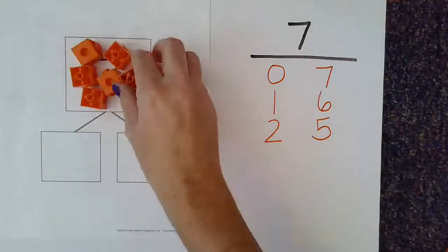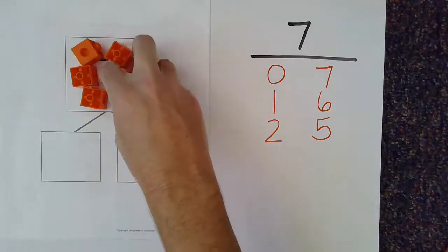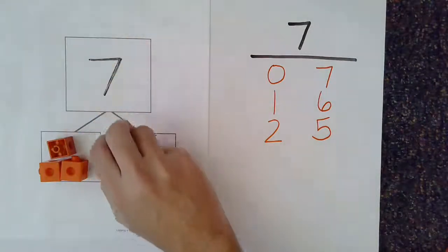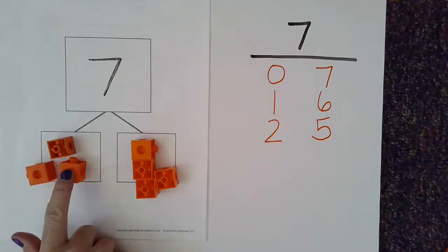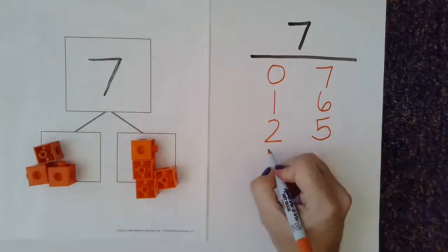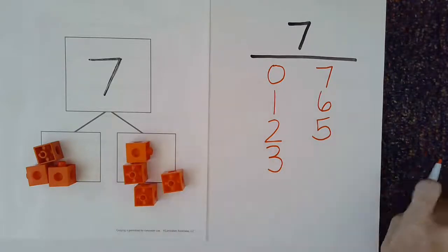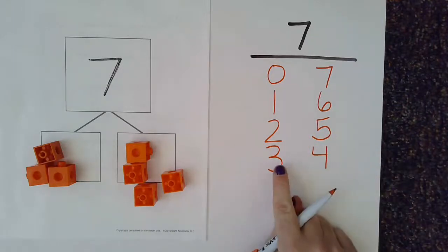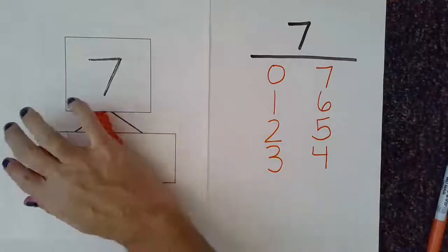I'll do the same thing. Start with seven in my whole, and this time I'm going to take three and put the rest in the other part. Let's count to find what number partners we've made here: one, two, three. So I have three in one part, and one, two, three, four as the other. So I know if I put four and three together, I'm going to make seven.